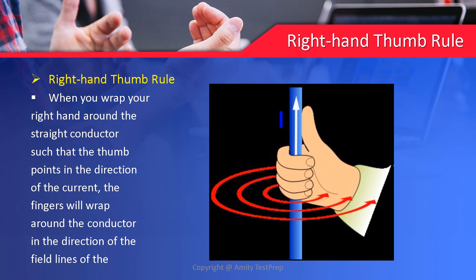Moving next — right hand thumb rule. This is an important rule used to explain the direction of magnetic field lines around a wire. The rule says: when you hold a straight current carrying conductor in your right hand such that the thumb points in the direction of current, then the curling of the fingers represents the direction of magnetic field lines. Mark it as important.